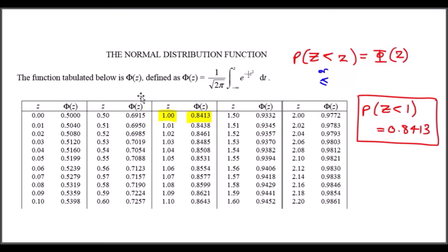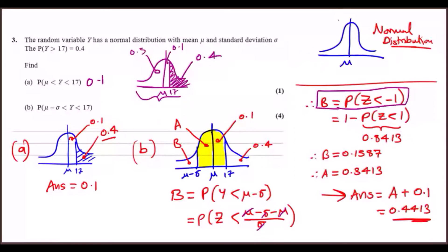So this Φ(z) is actually a notation for the probability of the random variable being less than z. This is a cumulative distribution; that's why the values are increasing. So we know that this is 0.8413, so 1 minus this will give us 0.1587.